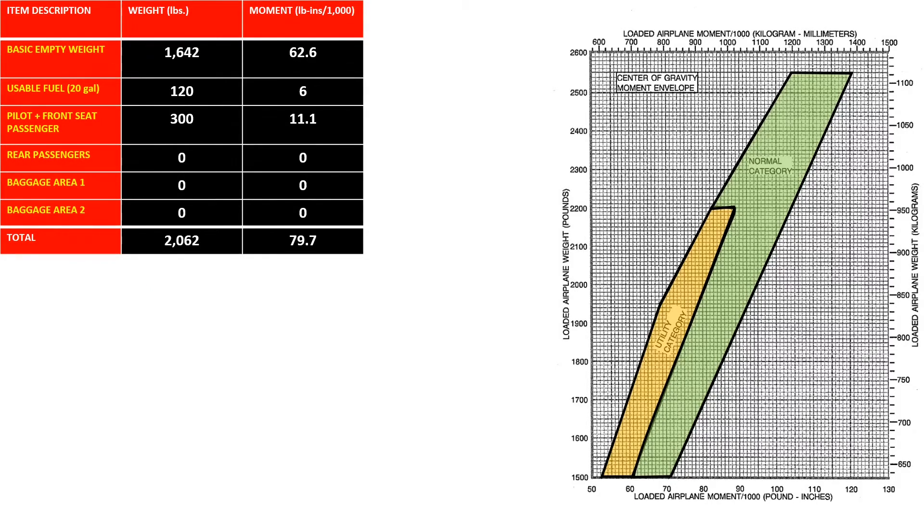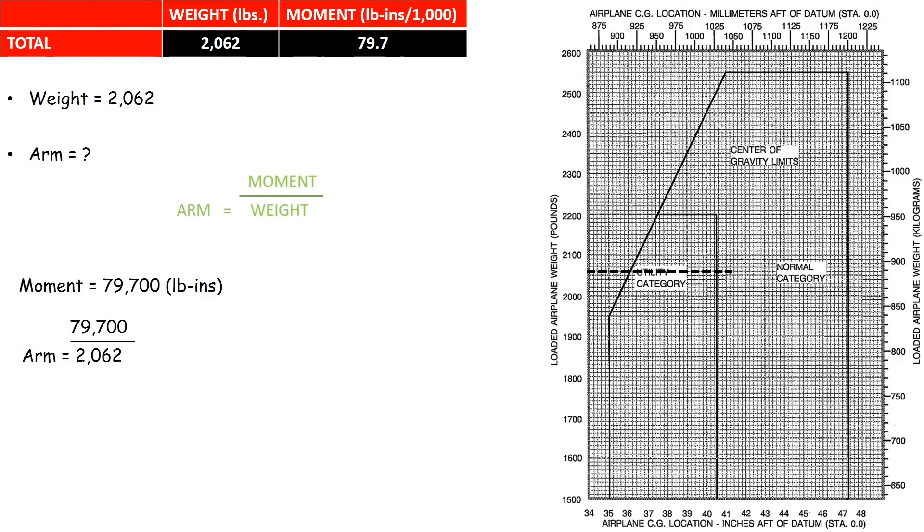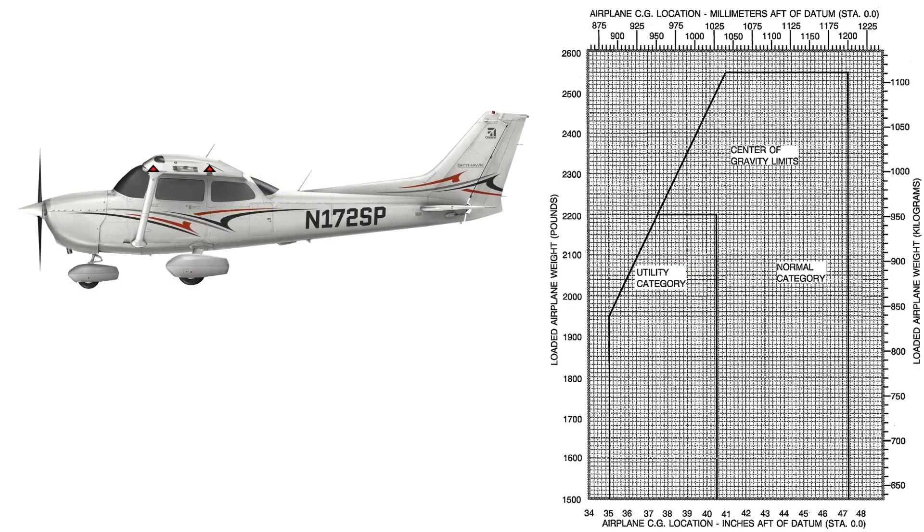Although the envelope graph shows combinations of weight and moment, another graph can be used to visually determine the exact position of the CG, the CG limits graph. The weight axis remains unchanged, however, manipulation of the moment formula is required to locate the arm coordinate. The CG limits represent the most forward or aft position permitted for the centre of gravity.